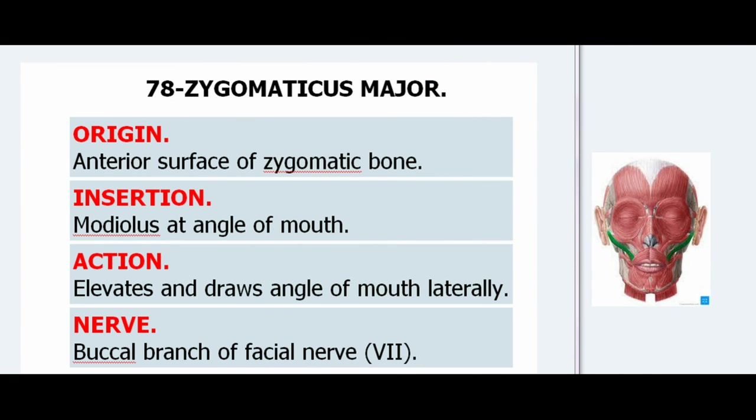78. Zygomaticus Major. Origin: Anterior surface of zygomatic bone. Insertion: Modiolus at angle of mouth. Action: Elevates and draws angle of mouth laterally. Nerve: Buccal branch of facial nerve (VII).